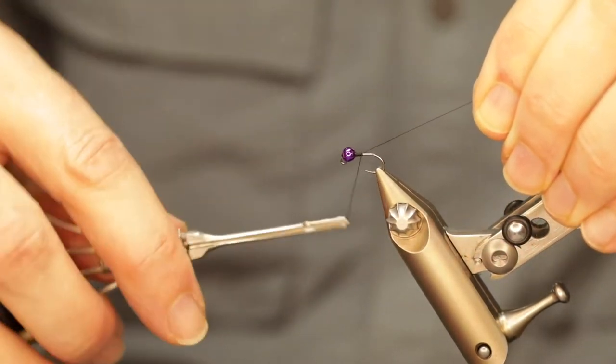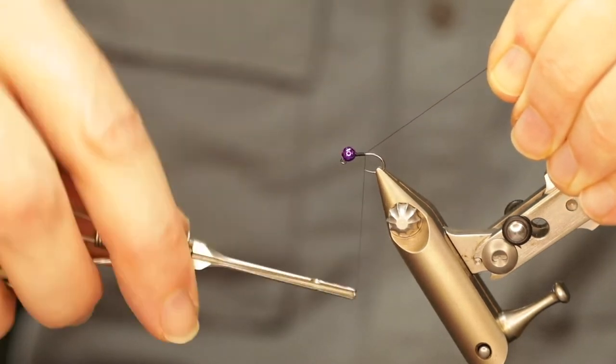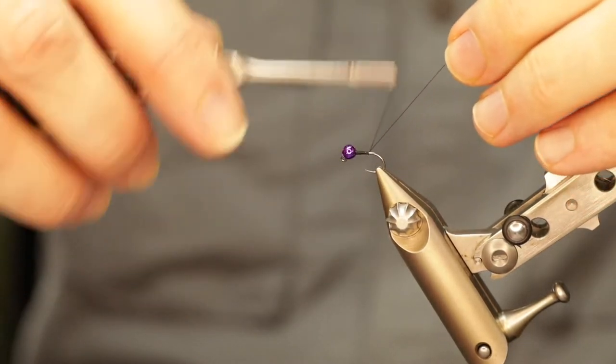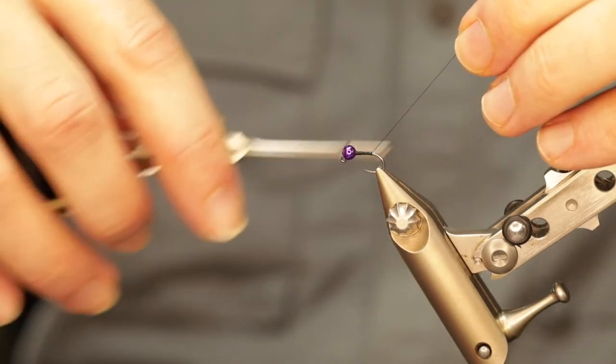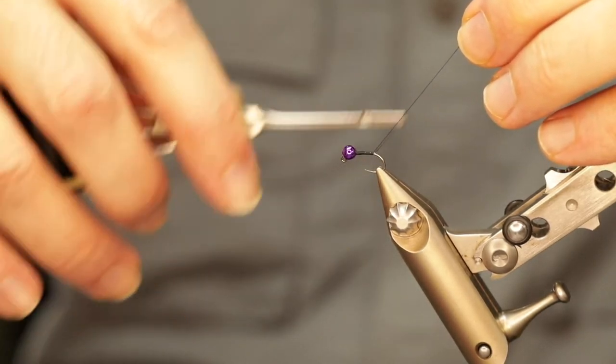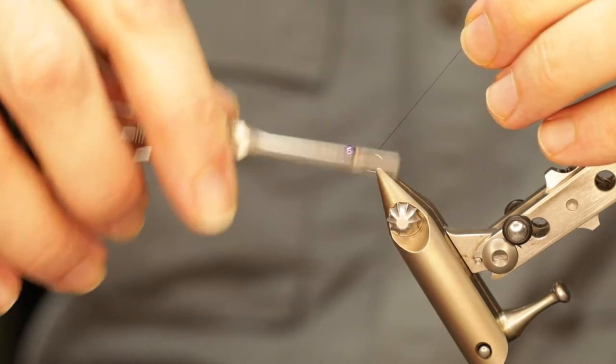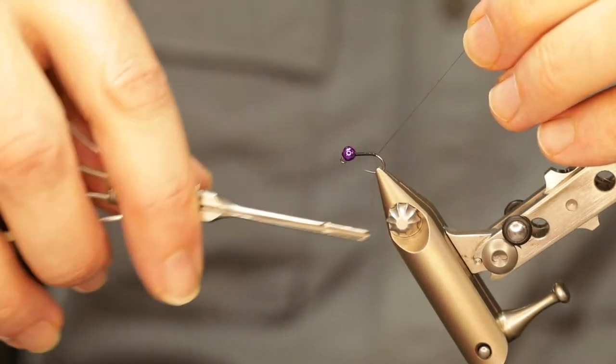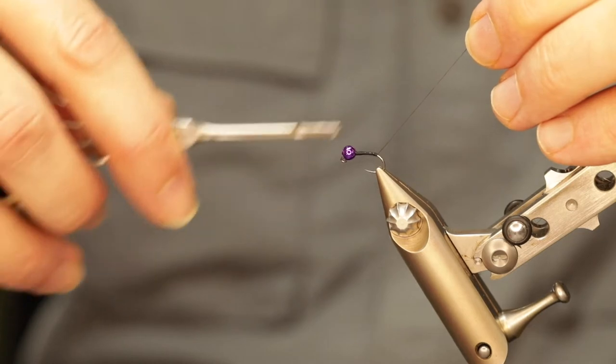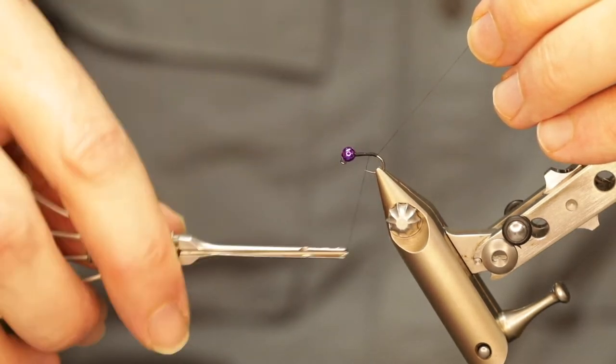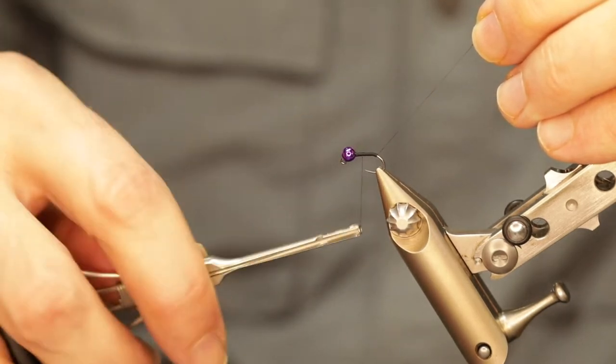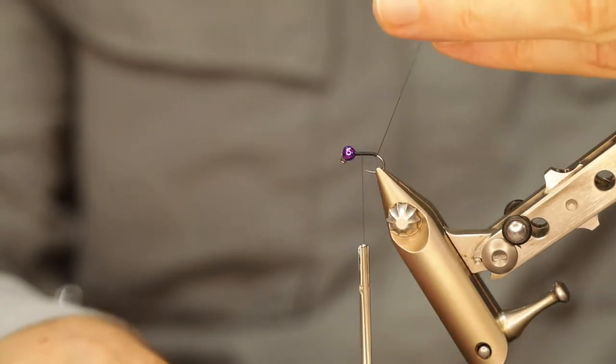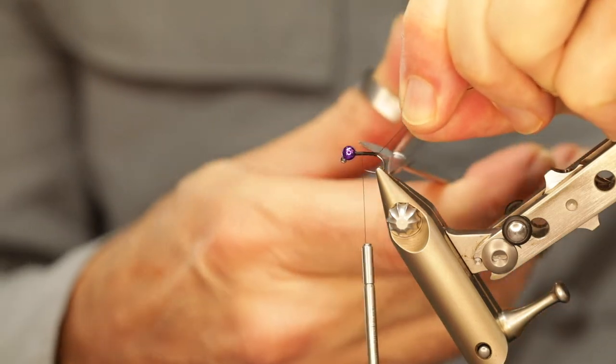So once you've got that in place then thread wraps, again using the excess thread to guide your thread wraps and keep them nice and tight, back down and around the bend of the hook a little bit. Once you've completed that then go forward back to a few mil behind the bead itself. Get rid of your excess thread.